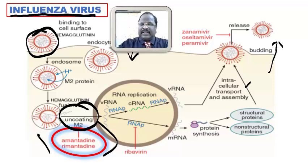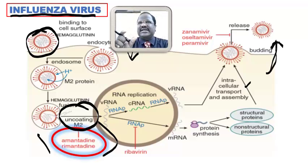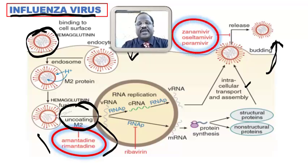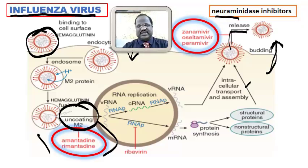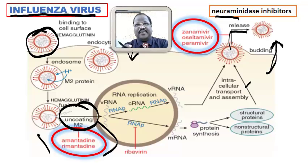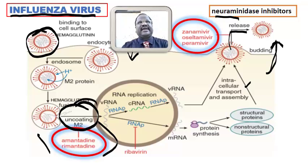There are also some drugs that inhibit the release of virus. The release is done by an enzyme called neuraminidase. The neuraminidase inhibitors are zanamivir, oseltamivir, and peramivir. These drugs inhibit the release of the virus by inhibiting the neuraminidase enzyme.